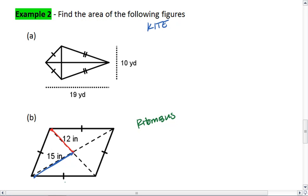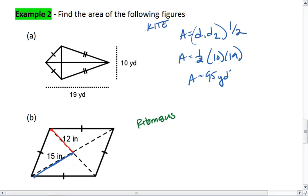Let's jump back up to the kite. Kite and rhombus have the same equation for area. The area is the diagonals multiplied together times 1 half. For a kite, this particular kite, I get 1 half of 10 times 19, which is 1 half of 190, which is going to be 95. I get 95 yards squared.